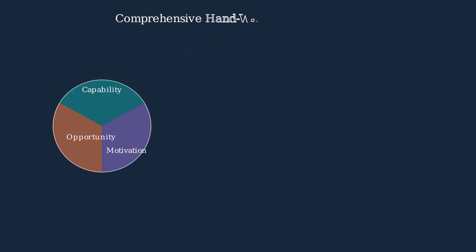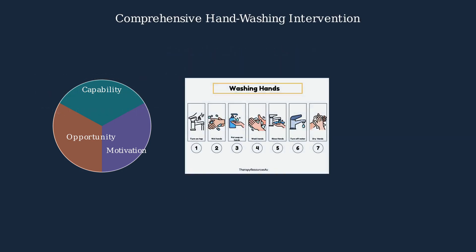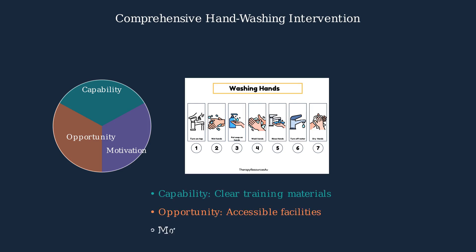An effective hand washing intervention addresses all three COM-B components simultaneously. By combining education, access to facilities, and motivation-building strategies, we can successfully promote proper hand washing behavior.